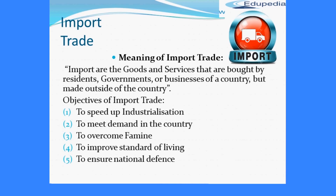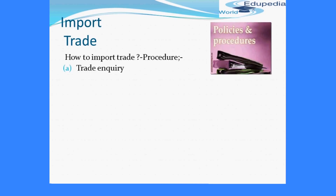Now let's look at the process and procedures of import trade. Number one is trade inquiry — the first stage in an import transaction is to conduct an inquiry and collect information about countries and firms that can export the required goods. The importer can get such information from trade directories, trade associations, and organizations. After identifying a suitable exporter, the importer sends a trade inquiry — a written request to the exporter for information regarding price, terms, and conditions of supply.